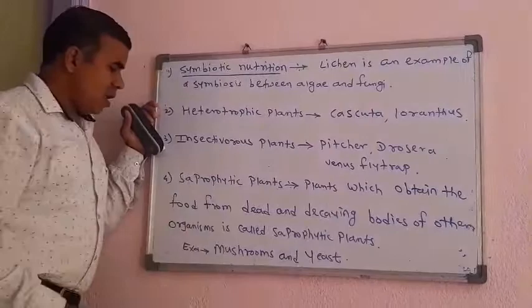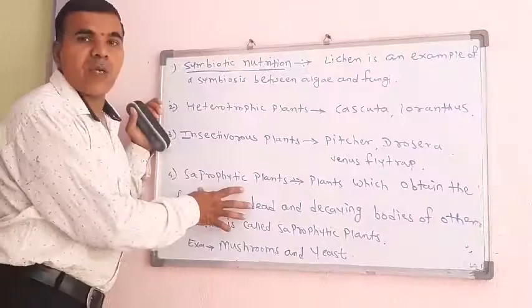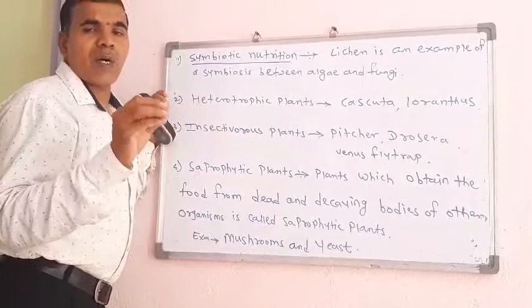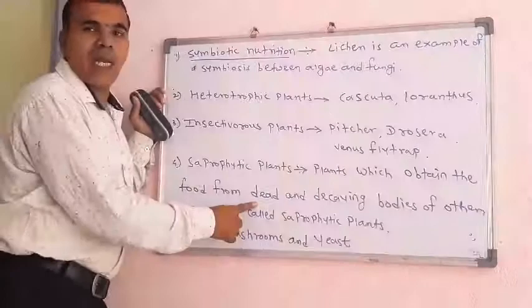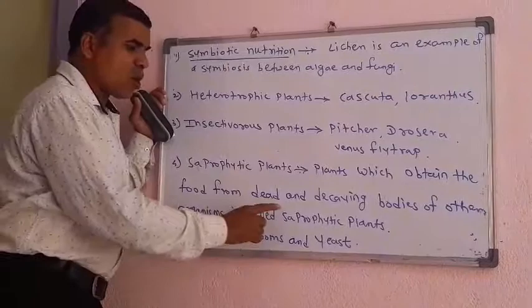Next: Saprophytic plants, meaning organisms that feed on dead matter. The plants which obtain food from the dead and decaying bodies of other organisms are called saprophytic plants.